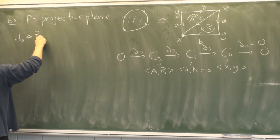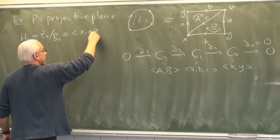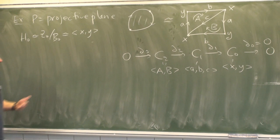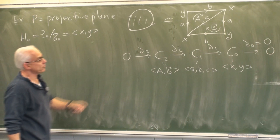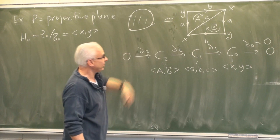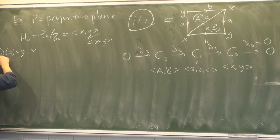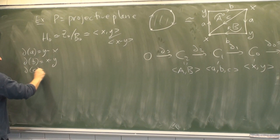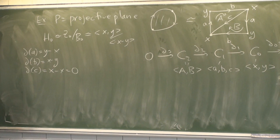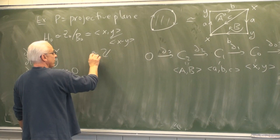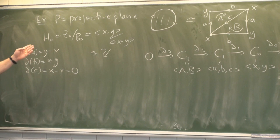H0 for the projective plane: the zero-cycles are the group generated by X and Y. The boundary of A is Y minus X, the boundary of B is X minus Y, and the boundary of C is X minus X, which is zero. So B0 is the subgroup generated by X minus Y. This identifies X and Y, giving us a single copy of Z. The projective plane is connected, so H0 equals Z.